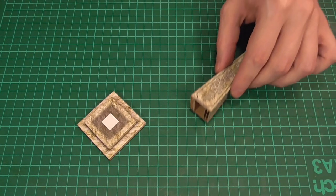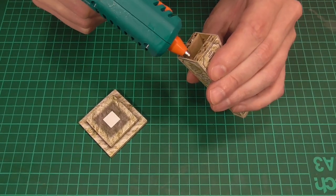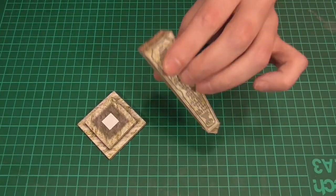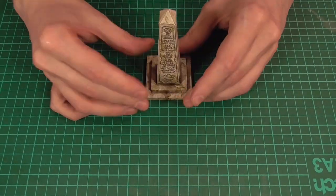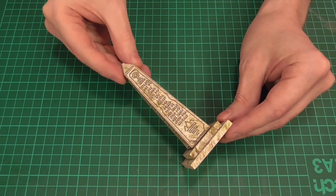Okay then, so if I bring in the obelisk again all we'll need to do to finish the whole thing off is glue the obelisk on top of the plinth, which is exactly what you can see me doing here. And there you go there's the finished piece.